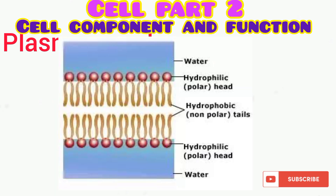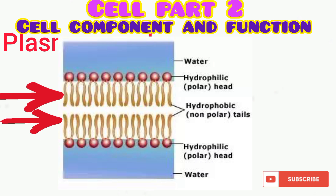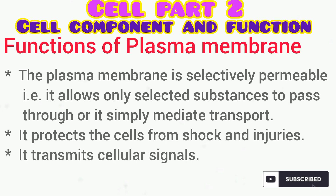Looking at the diagram of the phospholipid bilayer, the outer layer — the phosphate end — is hydrophilic, meaning they love water. The middle part of both ends is actually hydrophobic. Singer and Nicholson described the structure of a phospholipid as the fluid mosaic model. The functions of the plasma membrane include being selectively permeable — selecting what goes in and out of the cell — protecting the cell from injury and shock, and transmitting cellular signals.